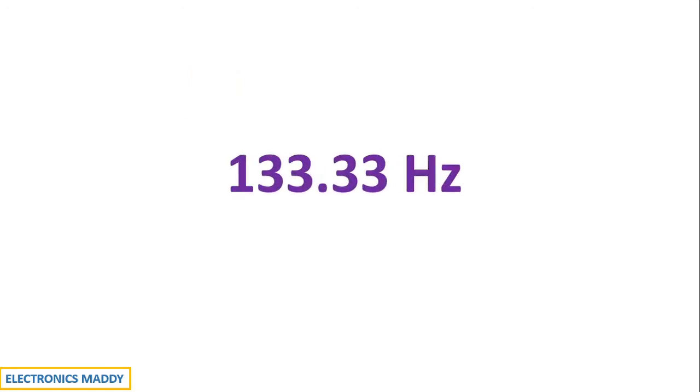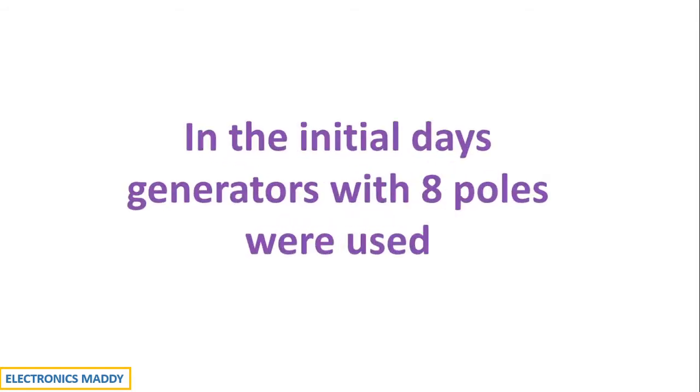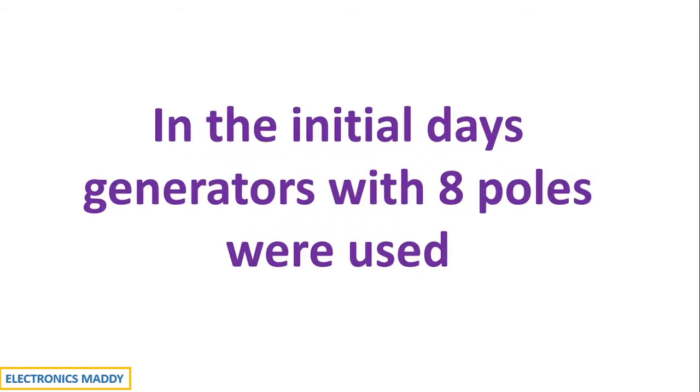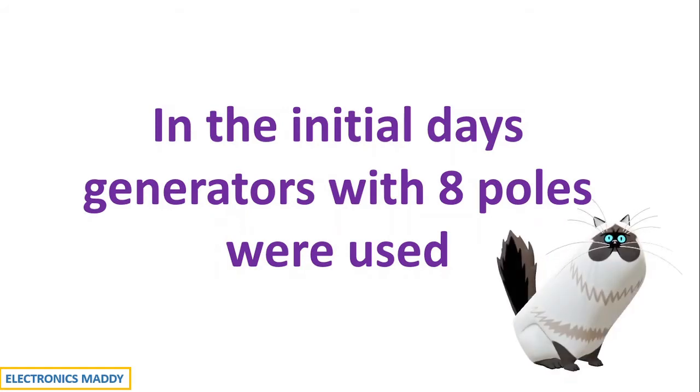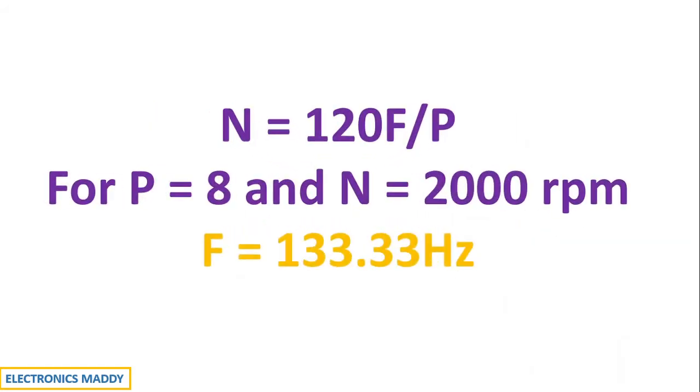In the initial days of invention of the light bulbs, a frequency of 133.33 Hz was used. In order to operate generators at 133.33 Hz, an 8-pole system was used. The speed of the generator is actually given by n is equal to 120 f by p. For poles p is equal to 8 and n is equal to 2000 rpm, we get f is equal to 133.33 Hz.